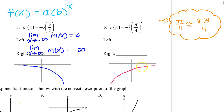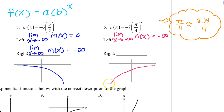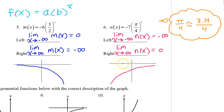As we move to the left, n of x is falling. Therefore, the limit as x approaches negative infinity is negative infinity. As we move towards the right, n of x is approaching the x-axis. So the limit as x approaches positive infinity is zero.